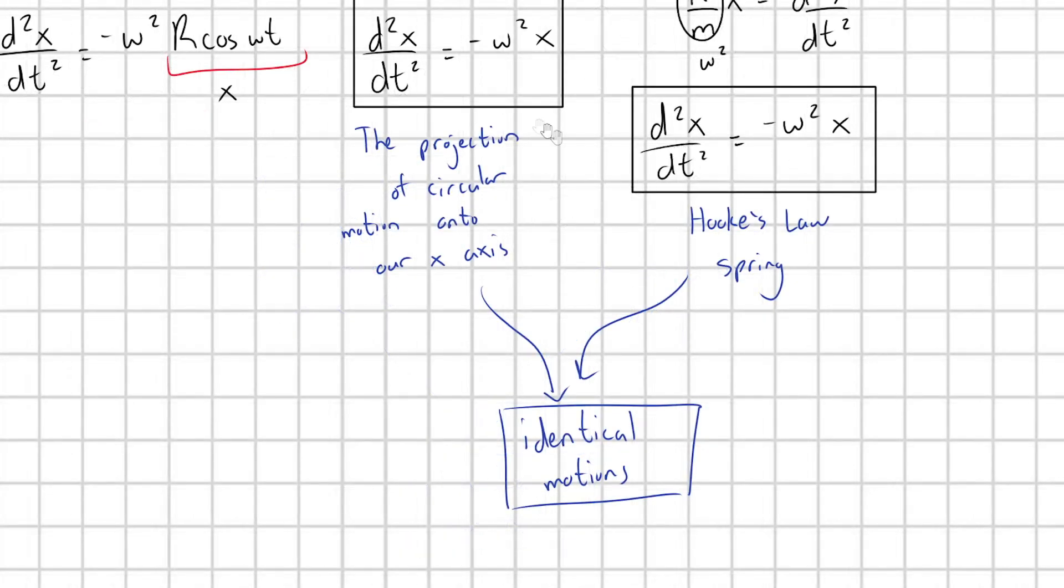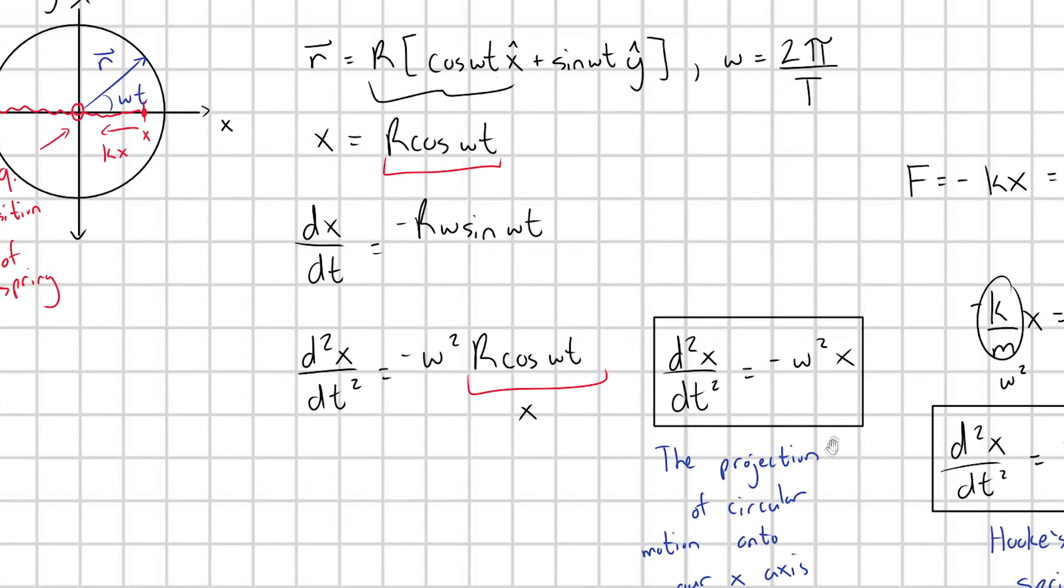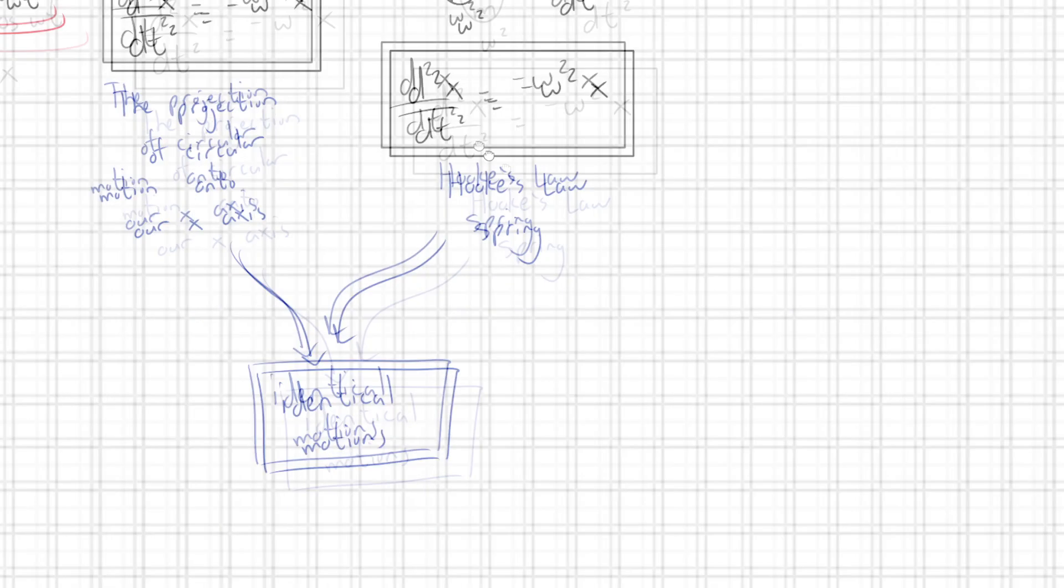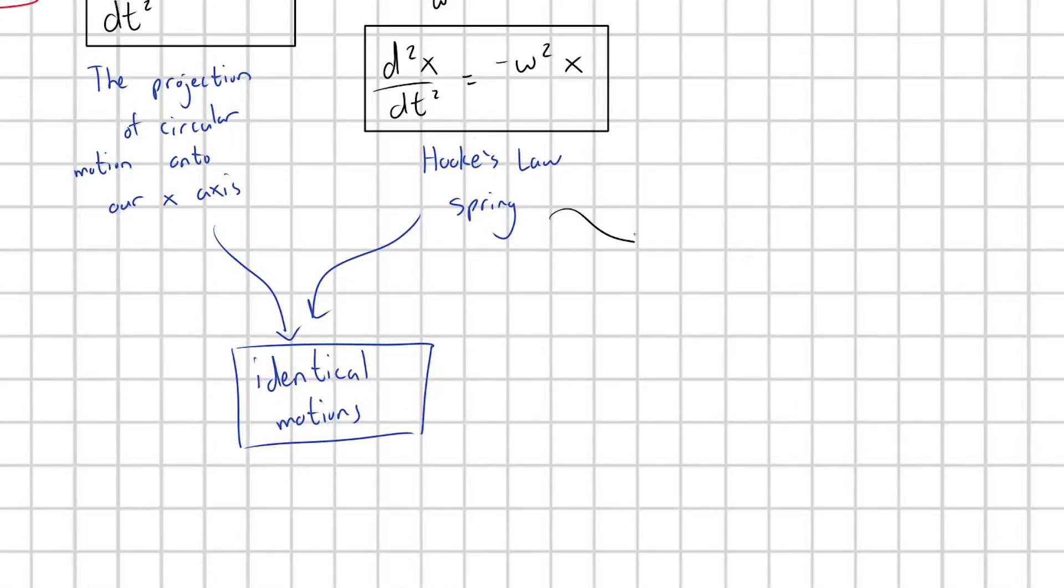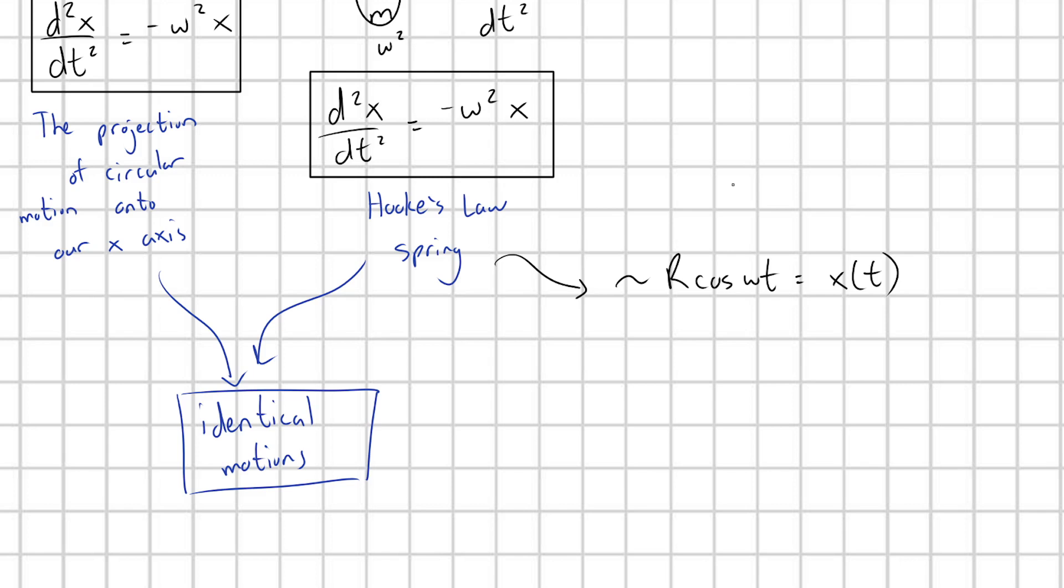So in other words, what was the motion of our circular motion projected onto the x axis? It's r cos omega t. So this Hooke's law spring is also going to have something of the form r cosine omega t for its position as a function of time.